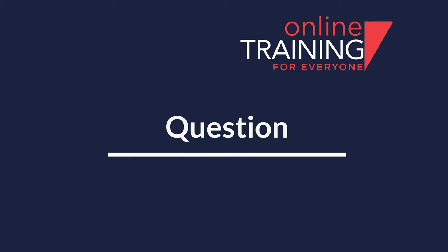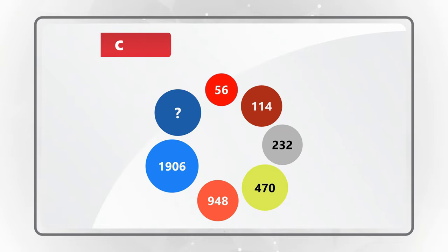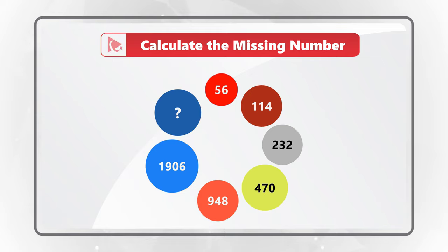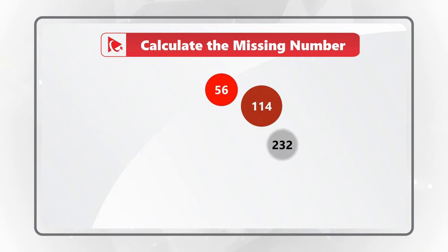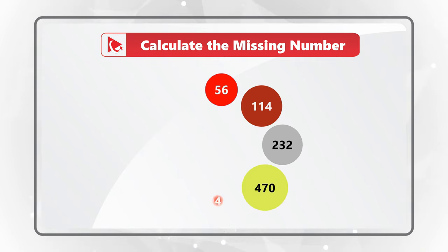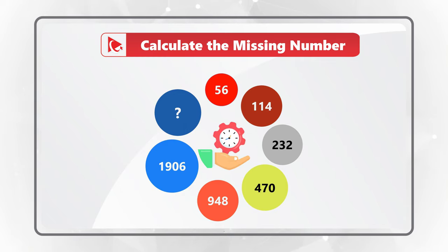Here is an extremely tricky question. You're presented with a sequence of circles arranged in a circle. The sequence starts with a red circle containing 56, then 114, 232, 470, 948, 1906, and then a circle with a missing number. Give yourself time to find the answer.